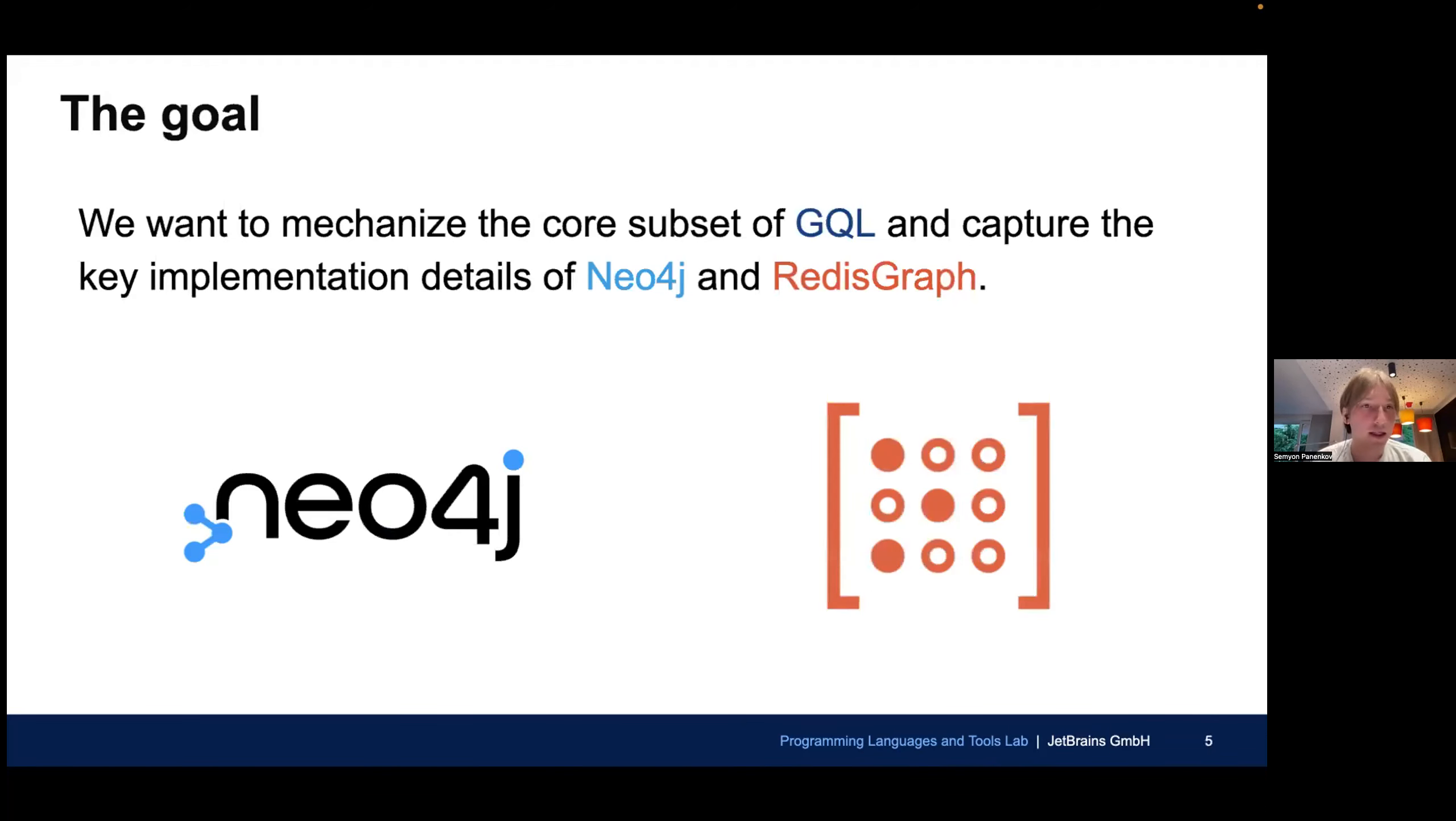Let us state our goal. We want to mechanize the core subset of GQL, which we define what the core subset is, and capture the key implementation details of two reference databases Neo4j and radius graph to show that our specification is realistic and can be used to prove things about real projects.